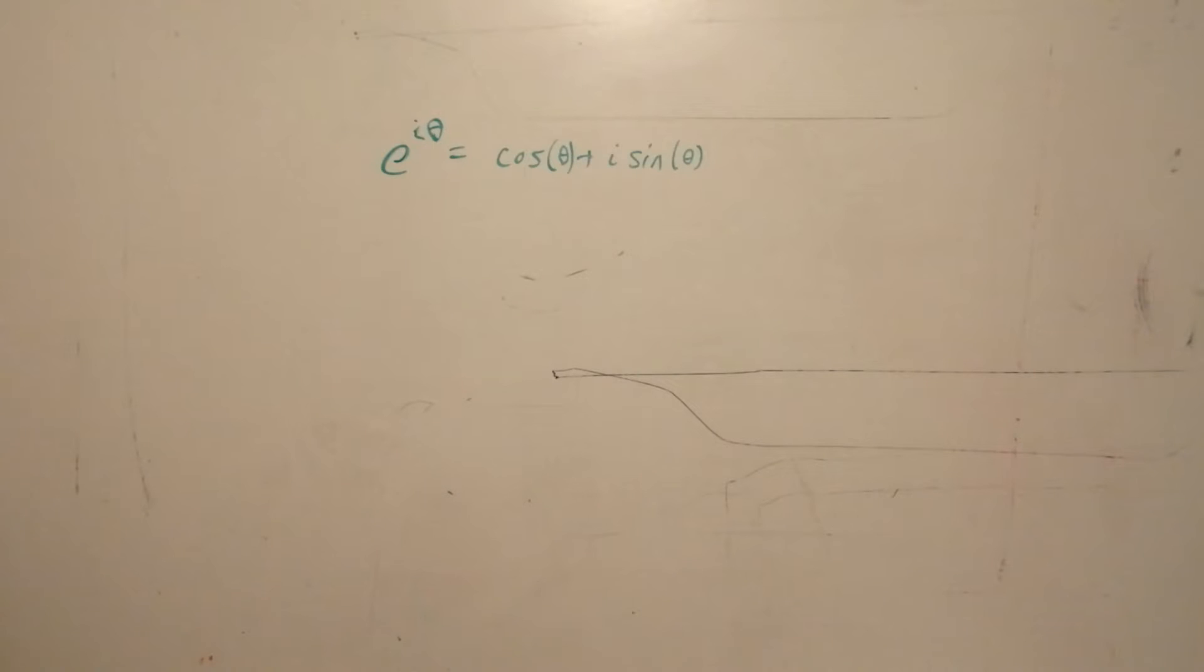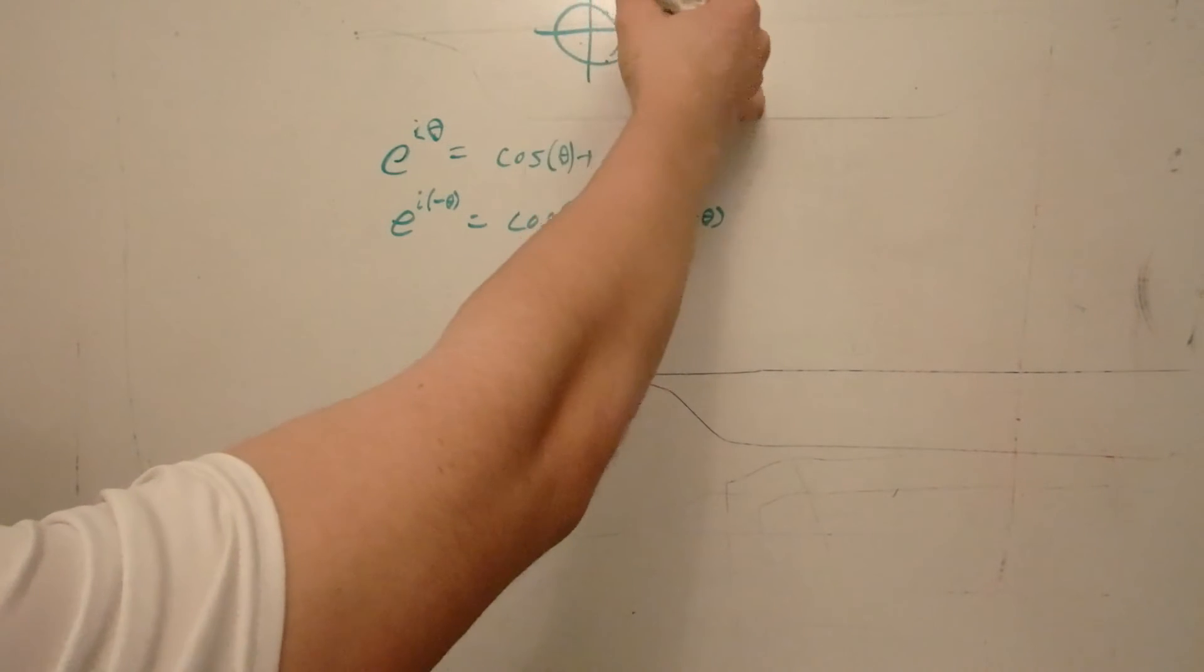So now what we want to do is delve into the trigonometric error. We can replace theta with a negative theta. So let's add a unit circle to visualize this. So if you think about it, theta is somewhere up here.